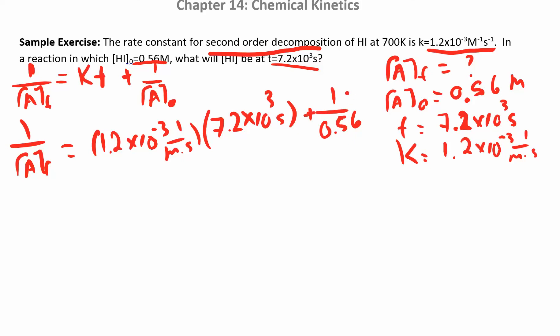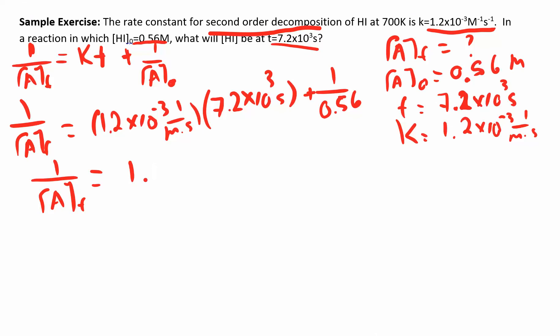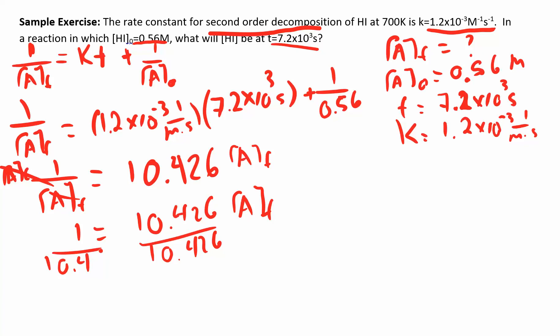Add it to this number after you multiply these together. So multiply this number, you get something and then add it to that. You get one over A at some time is 10.426. So to solve for that, you're going to multiply by A at some time. So I have 1 equals 10.426 A at some time. Now divide by 10.426.